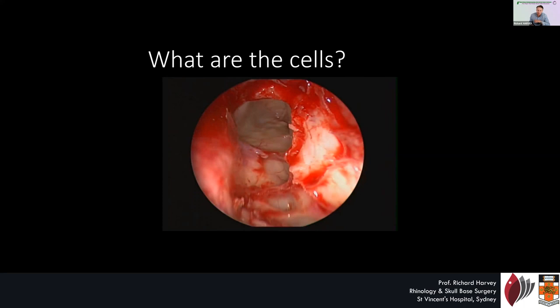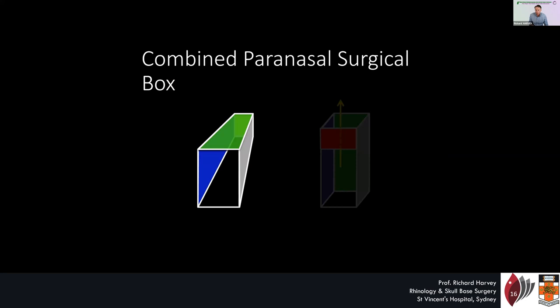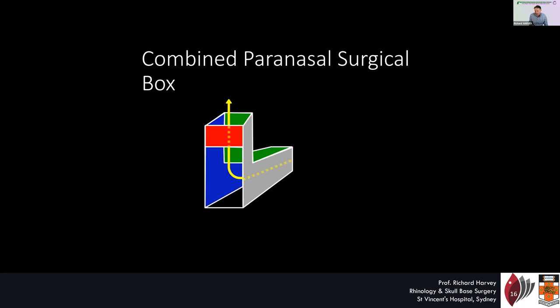When you know how to do a sphenoethymoidectomy, adding the frontal box into the whole thing just creates a sinus cavity that looks like this. This is really how a sinus cavity should look — a sphenoethymoidectomy and a vertical box that becomes a frontal.